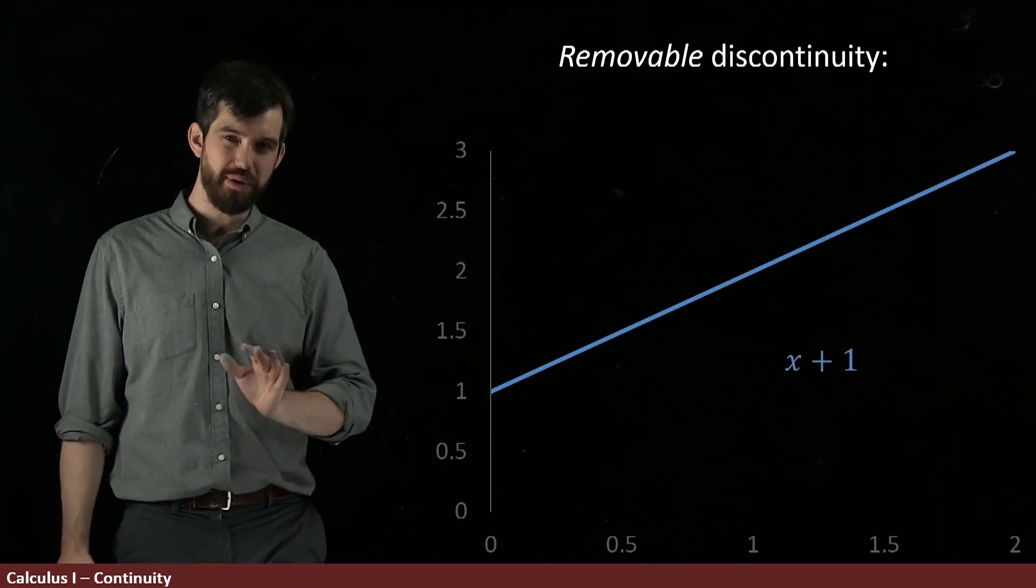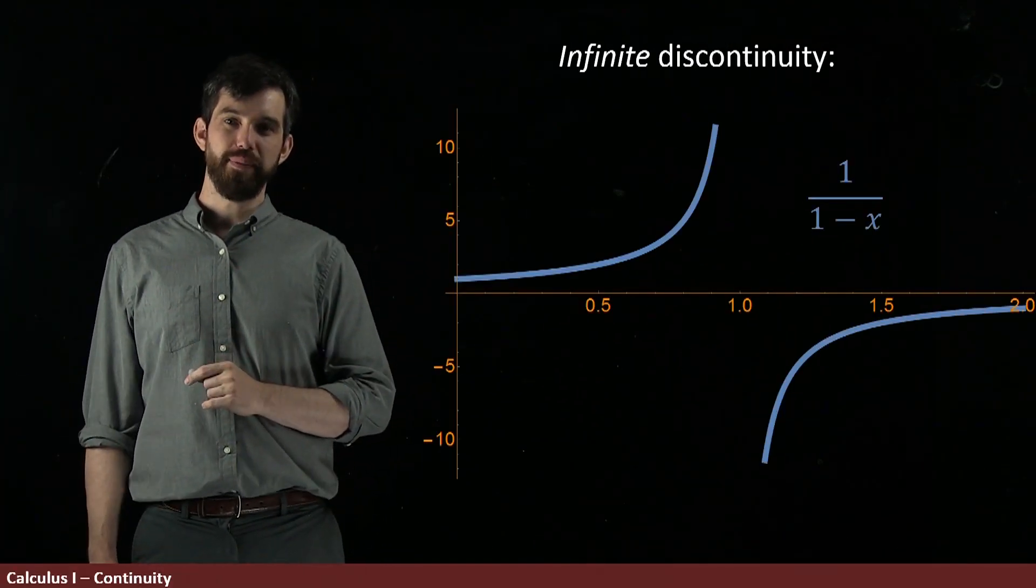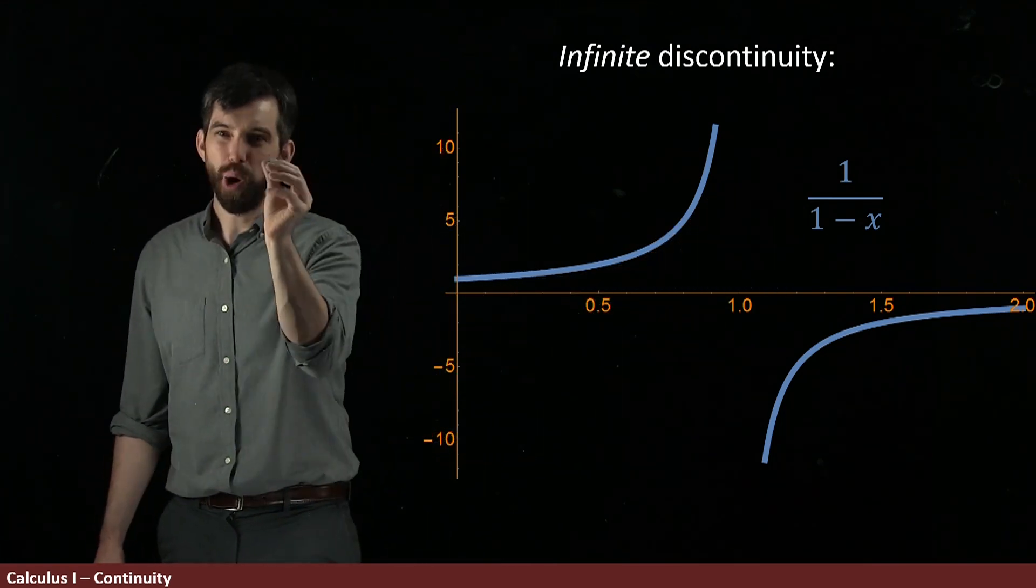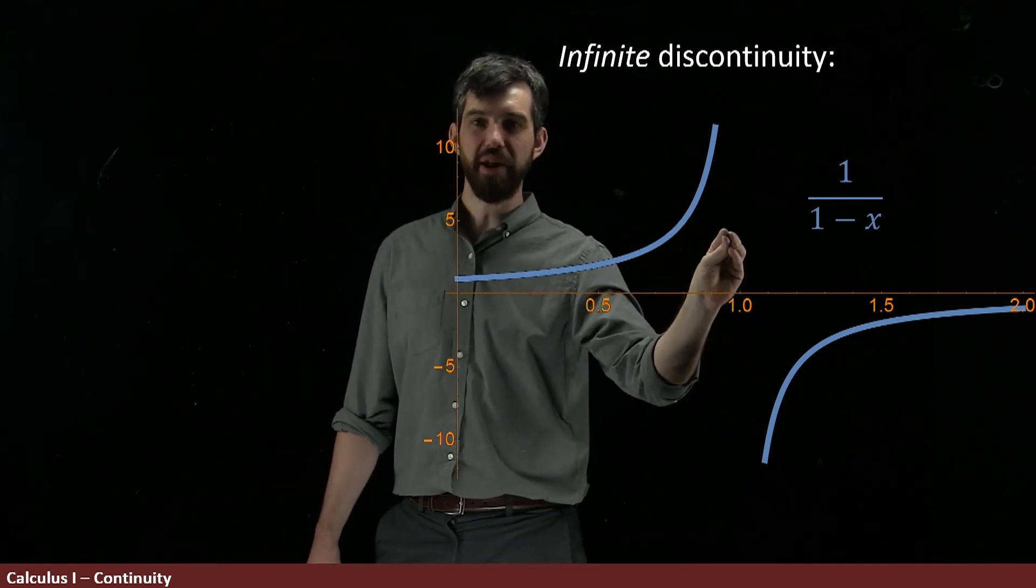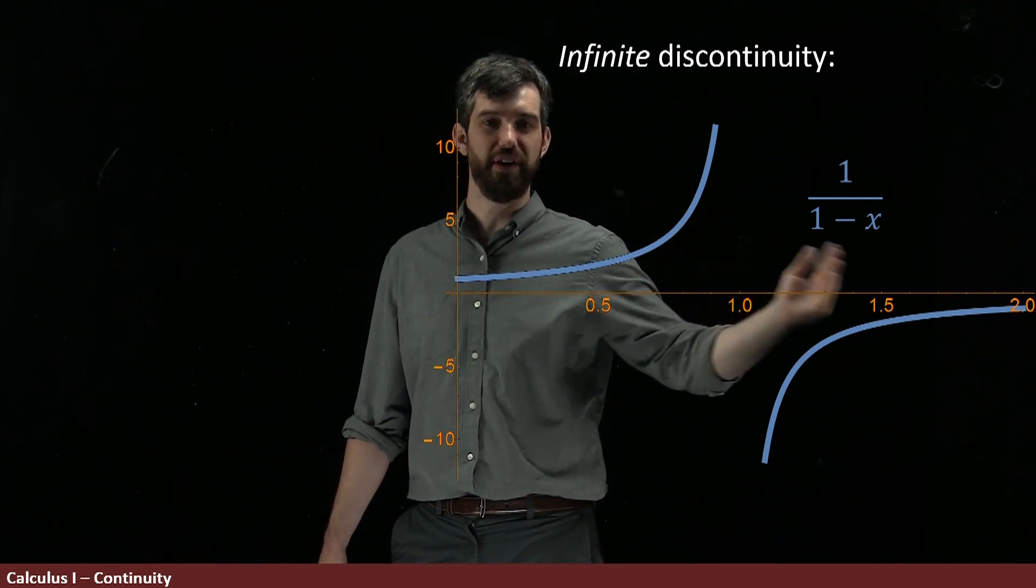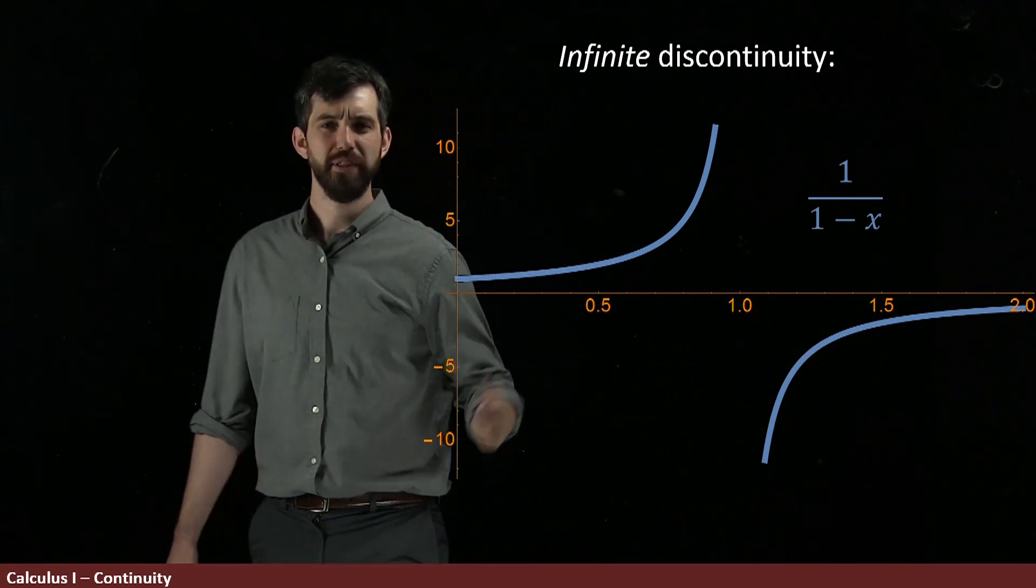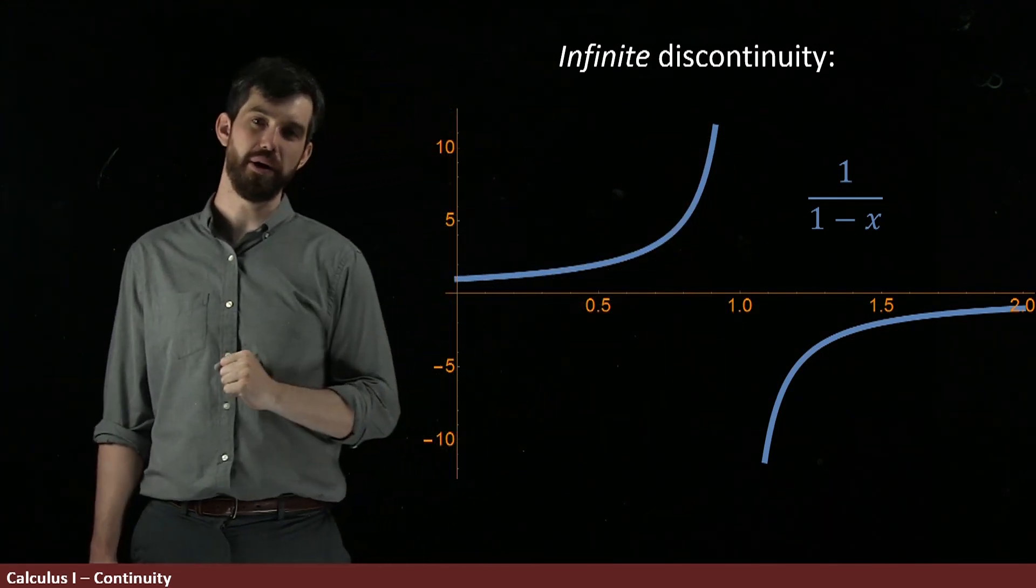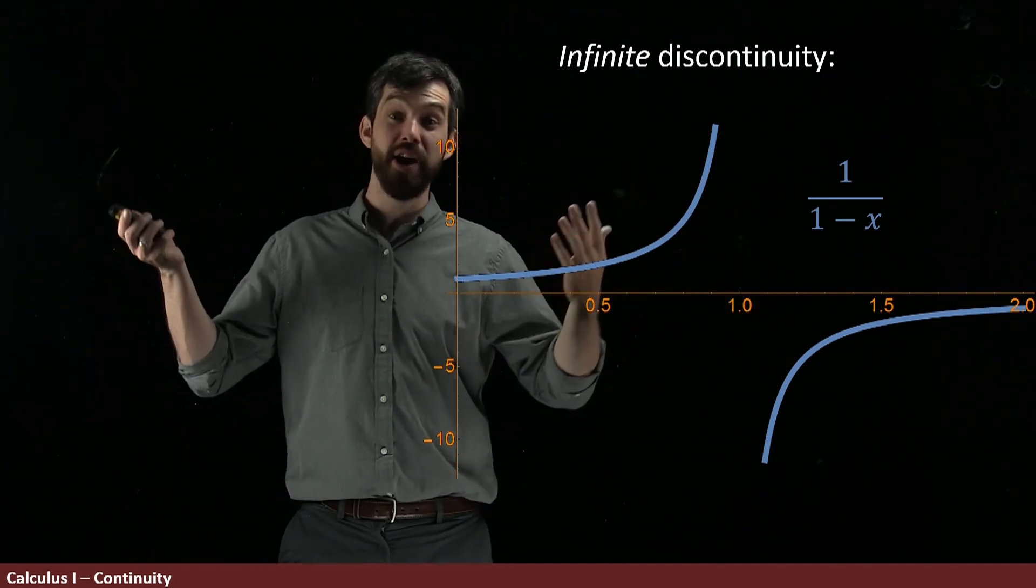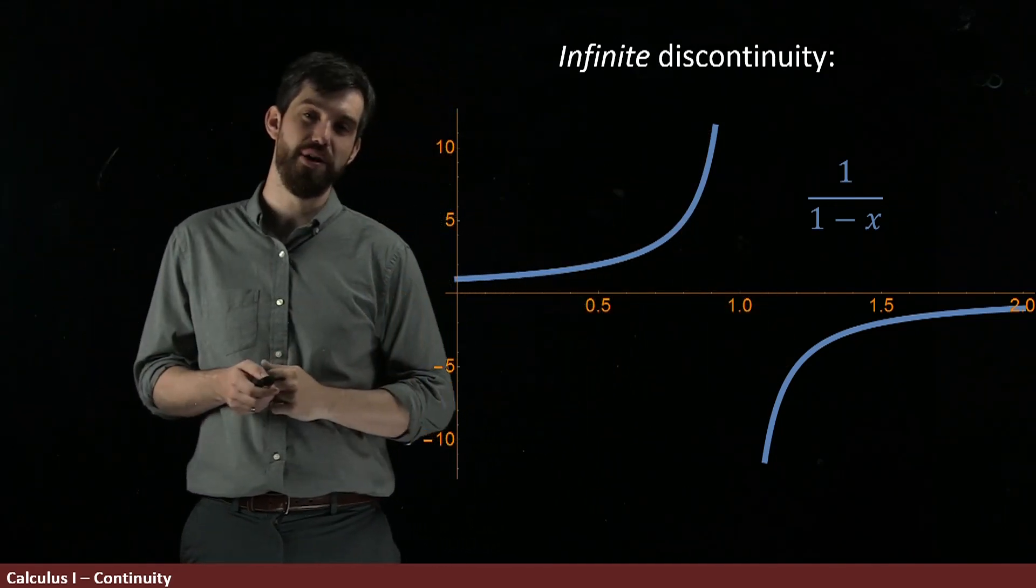However, this is not always the case. For example, in the spike, the one over one minus x, I can't put one point in and fix this. If I put in a point there, that wouldn't work because the limit from the left is plus infinity and the limit from the right is minus infinity. There's no one point I can put in here. So when we've got these infinite spikes, we'll call it, unoriginally, an infinite discontinuity.